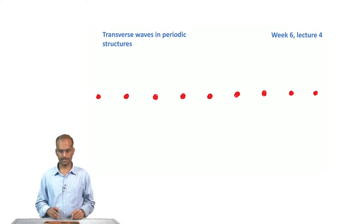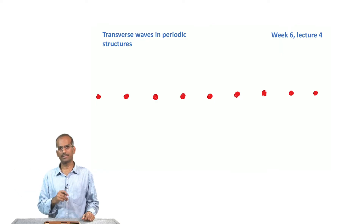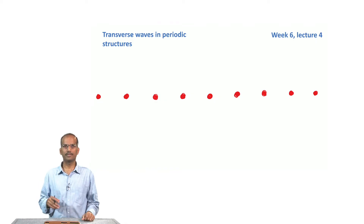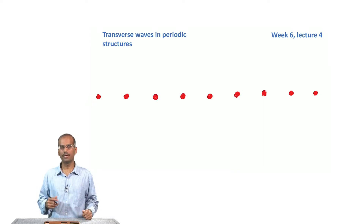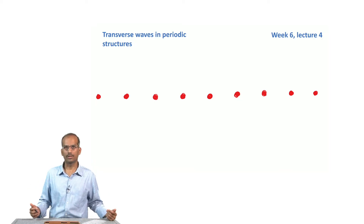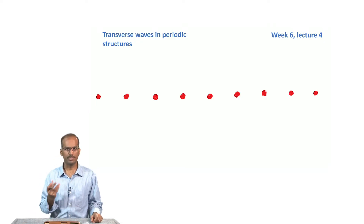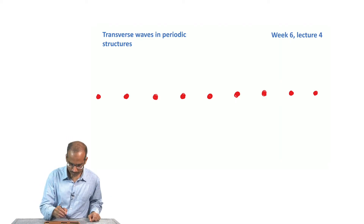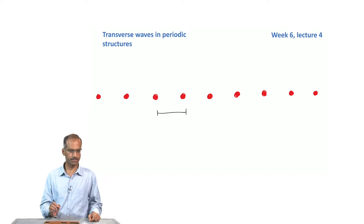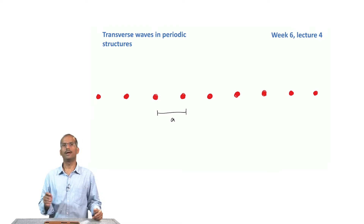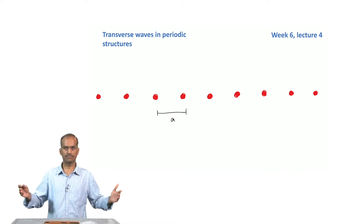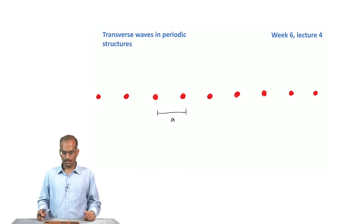Welcome to the fourth lecture of the sixth week. Previously we looked at a discrete collection of particles coupled together, and then took the limit where the distance between the particles goes to zero, so they form a continuum like a string. We looked at the normal mode oscillations of a string. Now the title says this is about transverse waves in a periodic structure. You can think of each of the red dots as an atom, with equal spacing between them, periodically placed in a lattice.